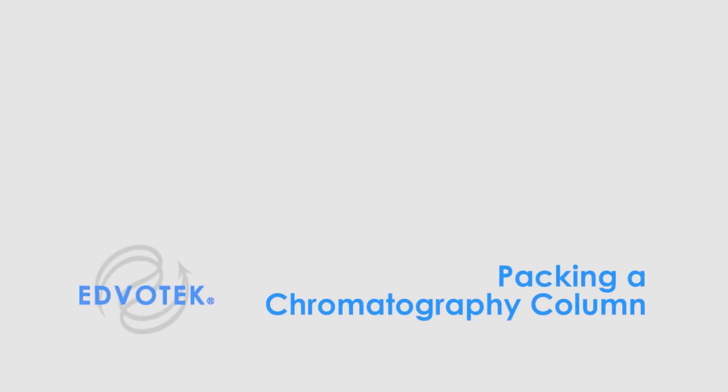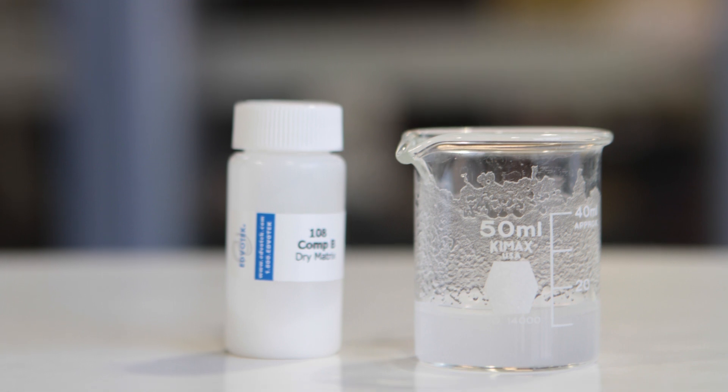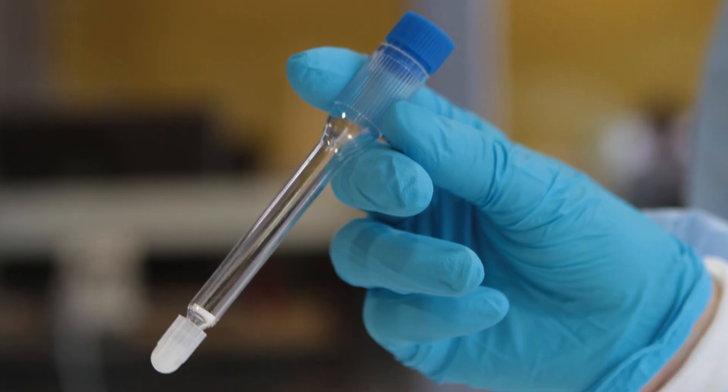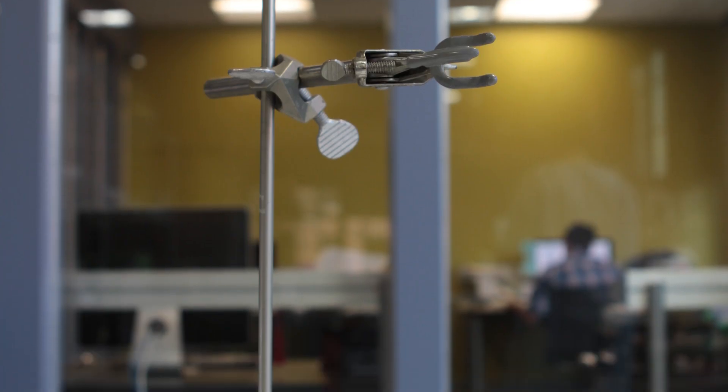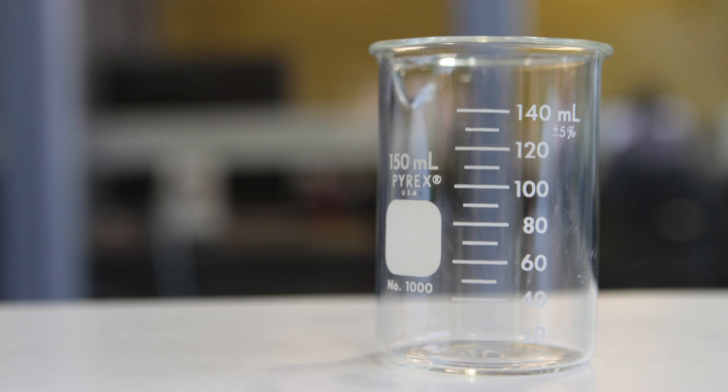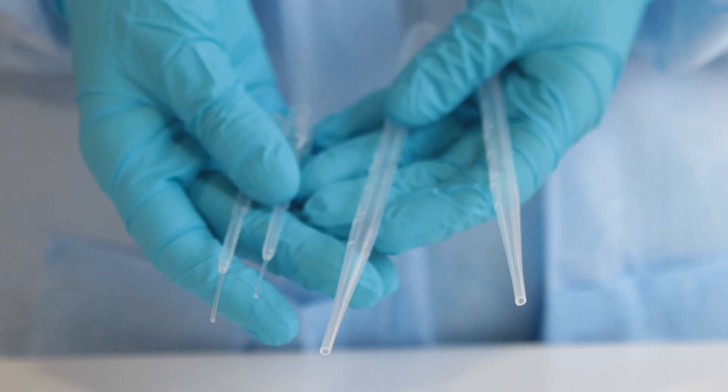Edvotek instructional videos: packing a chromatography column. You will need rehydrated chromatography matrix, empty column, ring stand and clamp, an empty beaker, and pipettes.